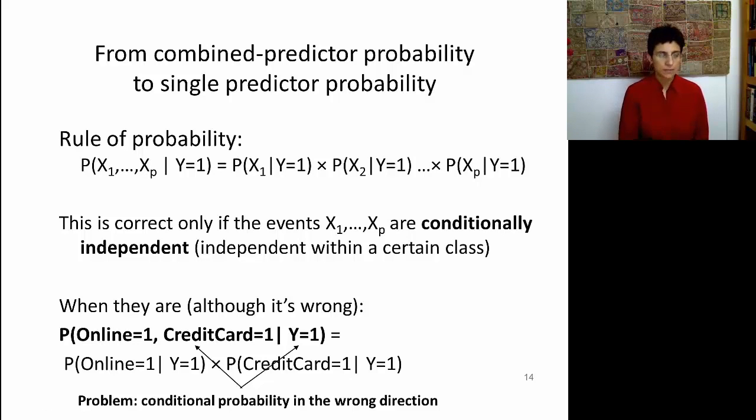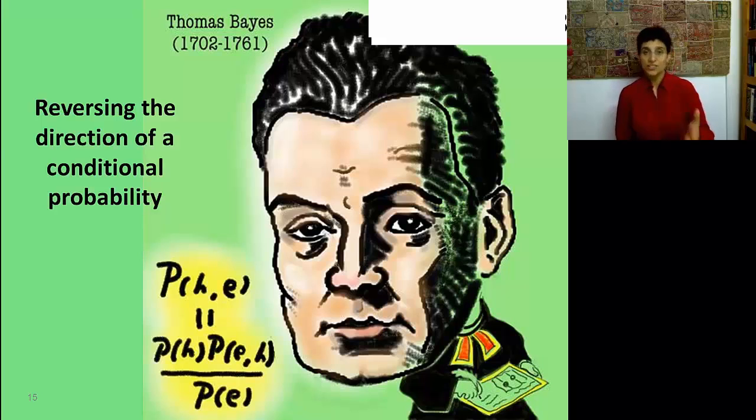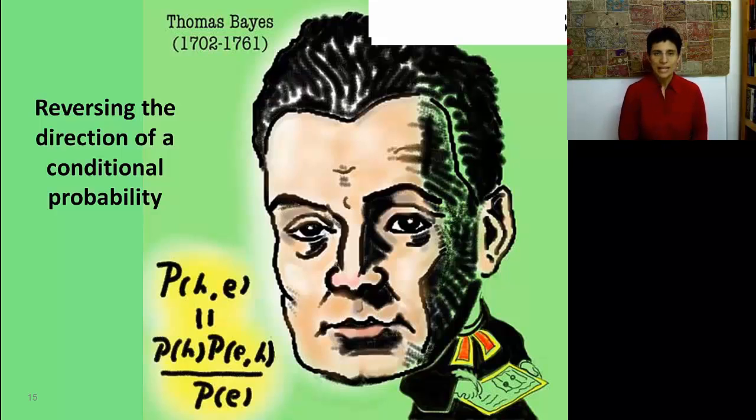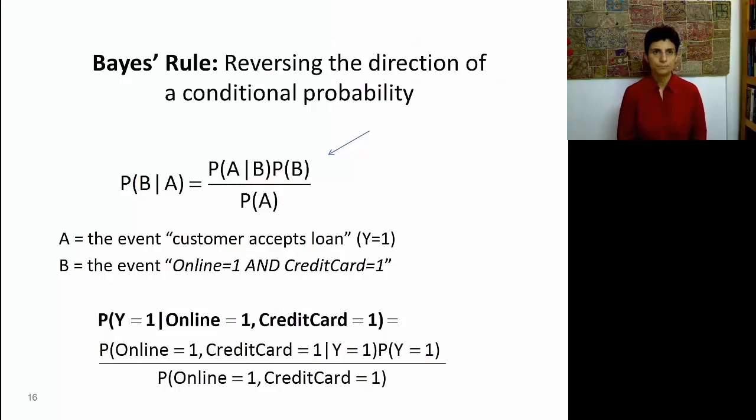Now, this is not exactly what we need, because what we need is the opposite direction. We need the probability of Y equals 1 conditional on the predictors. So we're going to have to use another probability trick to flip things the other way around. That's where the Bayes formula comes in. And this is a caricature of Reverend Thomas Bayes, who came up with this really ingenious trick. The idea of Bayes formula is reversing the direction of a conditional probability. If you give me probability of A given B, I can compute the probability of B given A. So here is Bayes rule. For a more extensive coverage, please go back to the notes from a previous course.